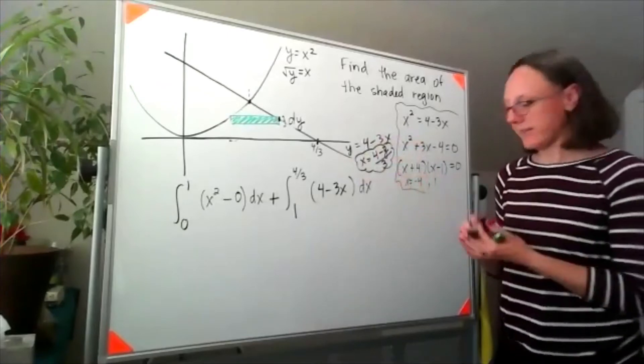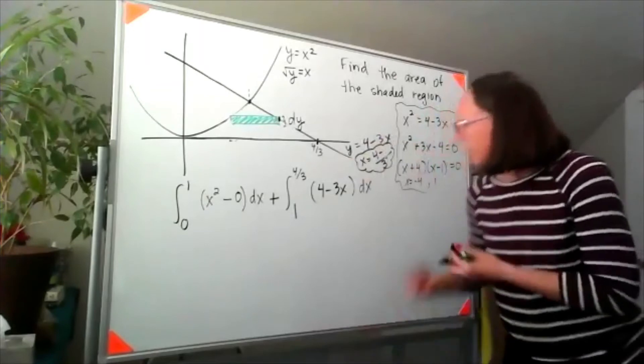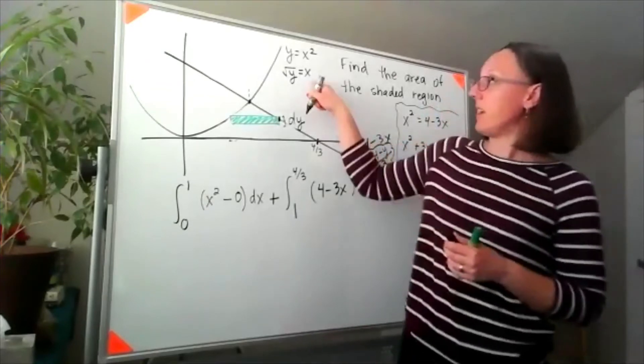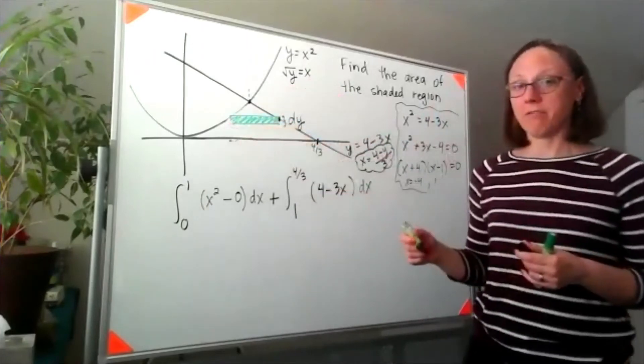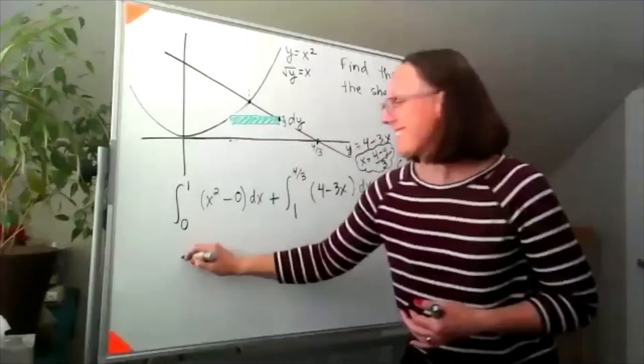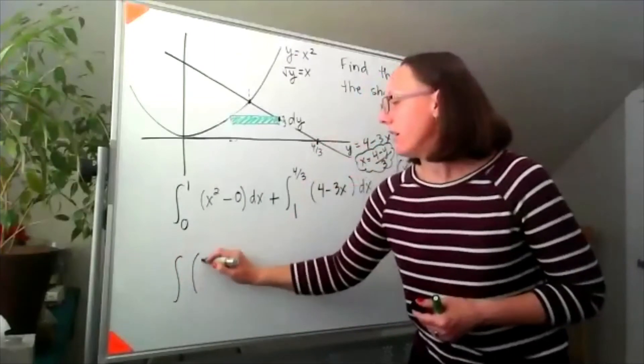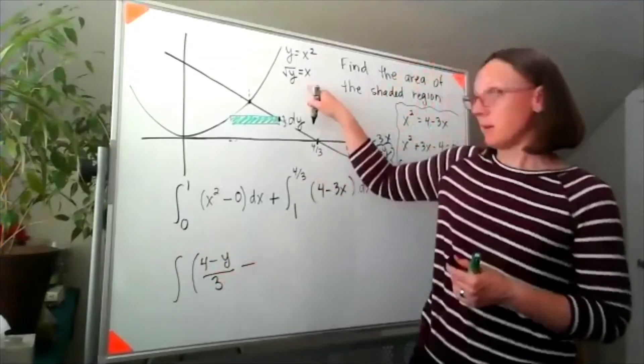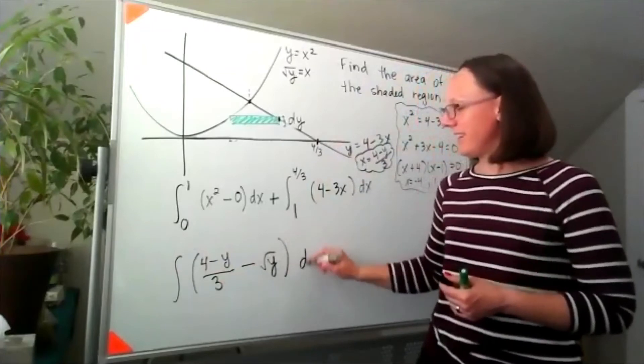So that would be my function on the right hand side, and that got a little bit messy. That would be my function on the right hand side, and x equals square root of y would be my function on the left. Writing this as a single integral, I'd have my right hand side, 4 minus y over 3, minus my left hand side, square root of y, dy.